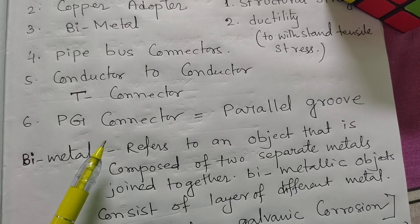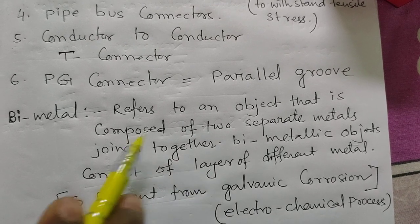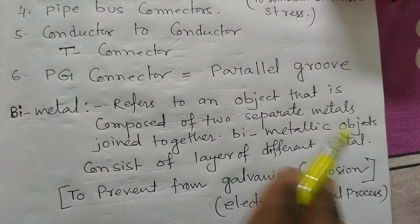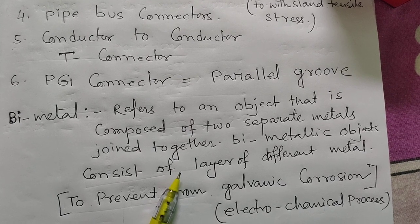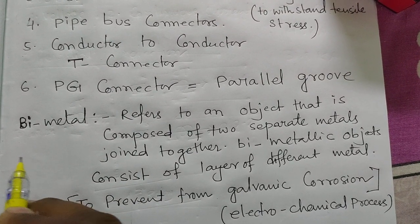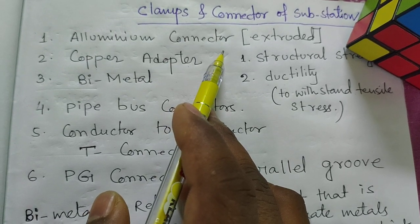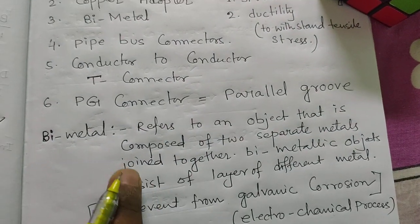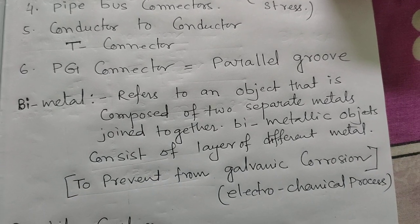What is bimetal? Bimetal refers to an object composed of two separate metals joined together. A bimetallic object consists of layers of different metals — not mixtures, but layers of the two metals. At substations, we use bimetals between a copper contact and an aluminium connector, because aluminium connectors are used for cost reduction, durability, and heat absorbing capacity.